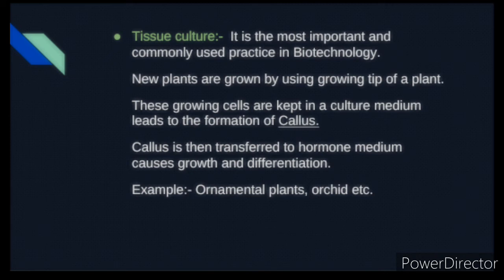Bahut saare undifferentiated cells ban jaate hain, phir unko hormones diye jaate hain. Un hormones ki madad se root aur shoot system develop hota hai, aur ultimately ek plant ki formation hoti hai. Callus is then transferred to hormone medium which causes growth and differentiation. Examples include ornamental plants and some orchids.